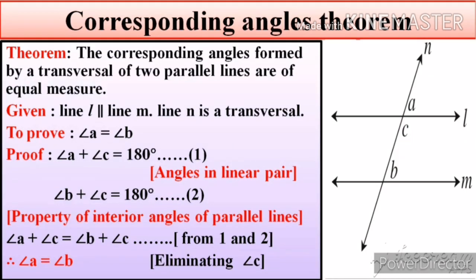From equation one and equation two, we get angle A plus angle C equal to angle B plus angle C. By eliminating angle C from both sides, we get angle A is equal to angle B.